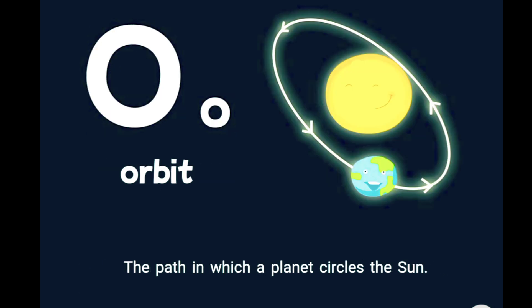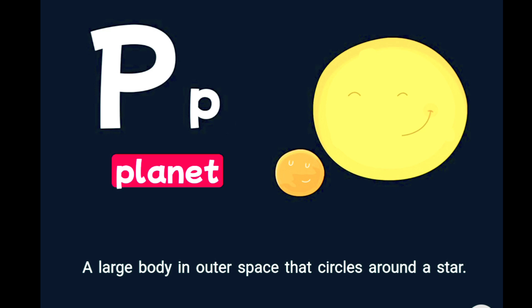O is for orbit, the path in which a planet circles the sun. P is for planet, a large body in outer space that circles around a star.